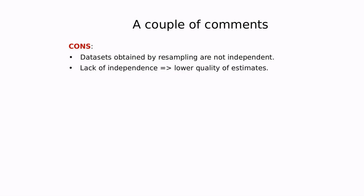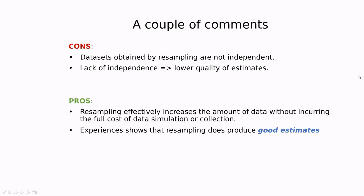Just to finish, a couple of comments. Take into account that resampling sounds cool, but in the end, you're using the same data over and over again. So there is a kind of lack of independence between each of those k cross-validation experiments, and that can reduce the quality of the estimates. But on the other hand, the experience shows that cross-validation works pretty well, and there are some theoretical reasons why this works. But in the end, cross-validation, especially leave-one-out and k equals ten cross-validation, is a kind of standard in machine learning.